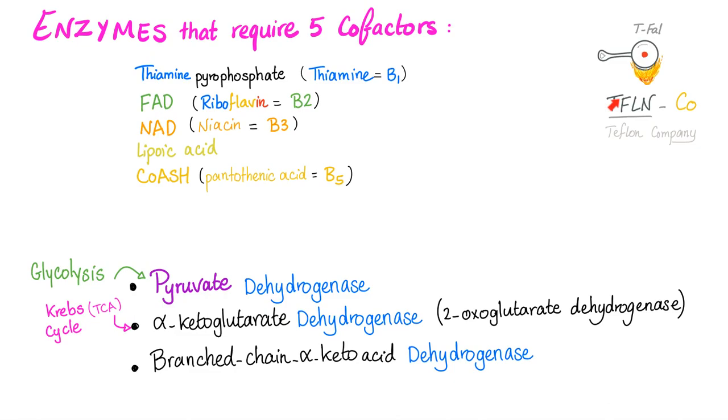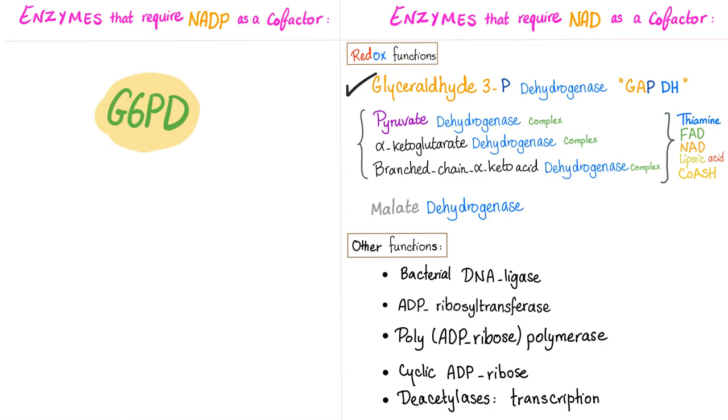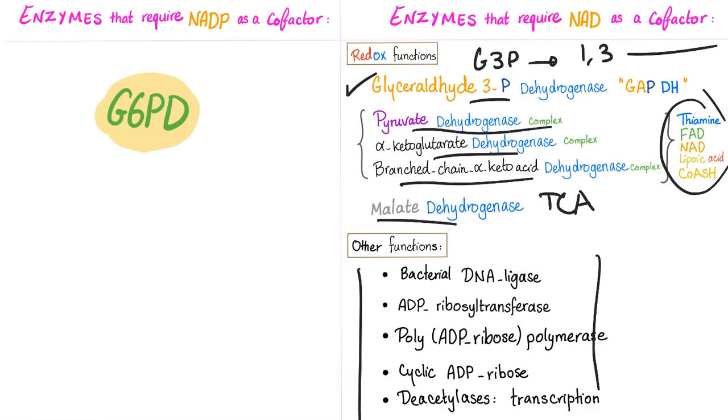Please don't forget the three enzymes that require five cofactors. We have talked about glyceraldehyde-3-phosphate dehydrogenase as part of glycolysis, converting glucose into pyruvate. But this one converts glyceraldehyde-3-phosphate into 1,3-bisphosphoglycerate. Pyruvate dehydrogenase, alpha-ketoglutarate, and branched-chain alpha-ketoacid dehydrogenase require the five cofactors. Malate dehydrogenase was part of the TCA cycle.